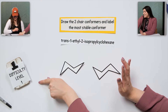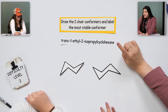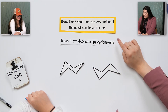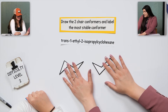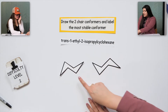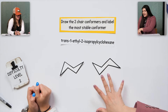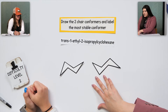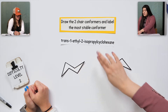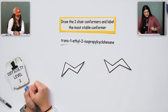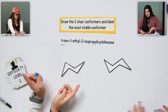Difficulty level two — let's change it up. This question says to draw the two chair conformers and label the most stable conformer. We're given the name. This is looking at the chair flip. What is this name telling us? Trans means opposite, so one is going up and one's going down.